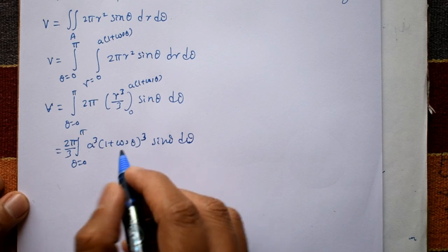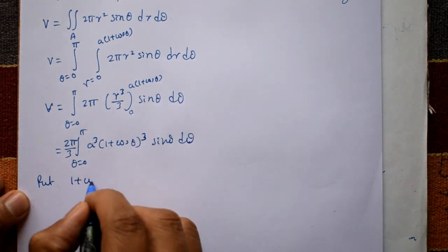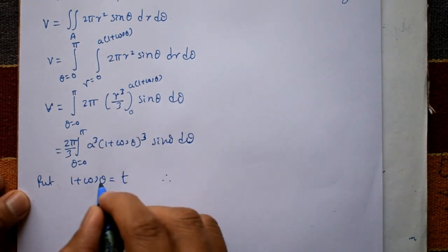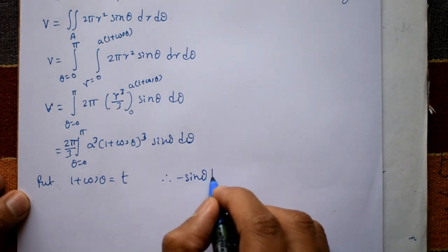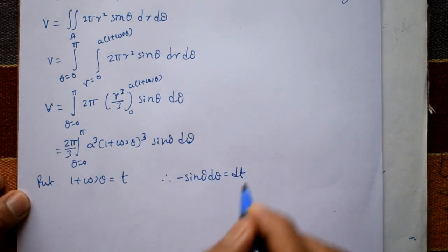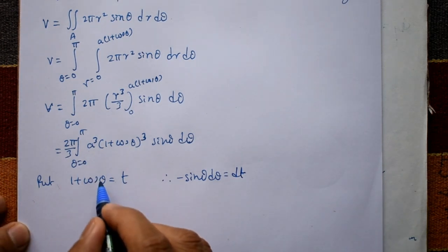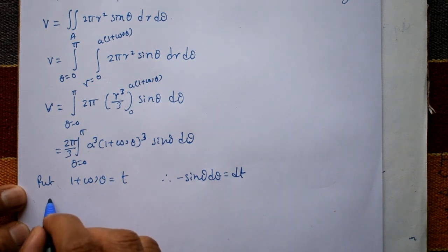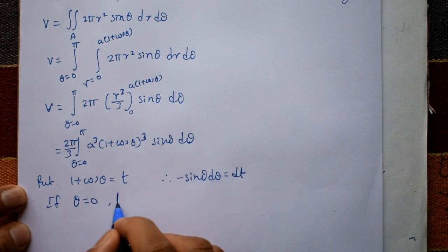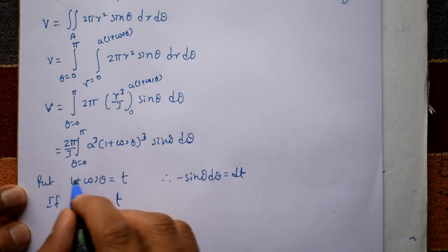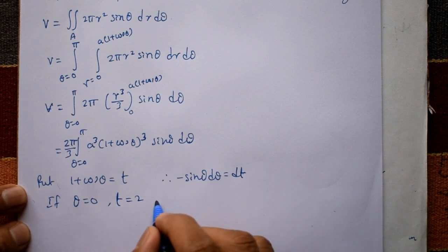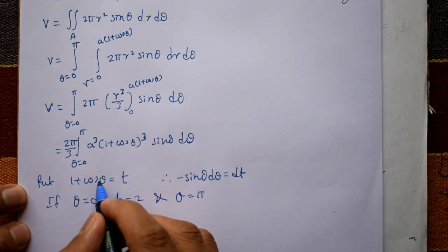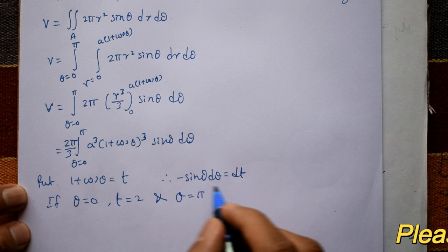Let t = 1 + cosθ. Differentiating, −sinθ dθ = dt, so sinθ dθ = −dt. When θ = 0, cosθ = 1, so t = 2. When θ = π, cosθ = −1, so t = 1 − 1 = 0.